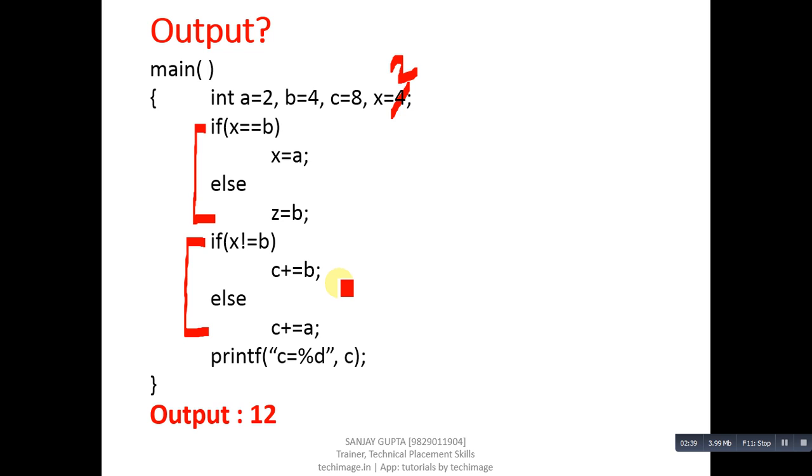So c plus equals to b will be performed, which means c equals to c plus b. C is 8 and b is 4, so value of c becomes 12. After completion of both the if-else statements, printf will print value of c. You can see value of c is 12, that's why output is 12.